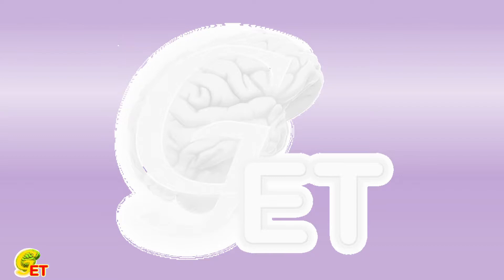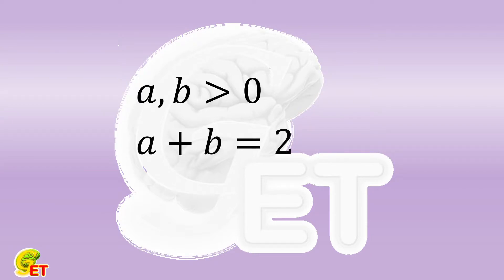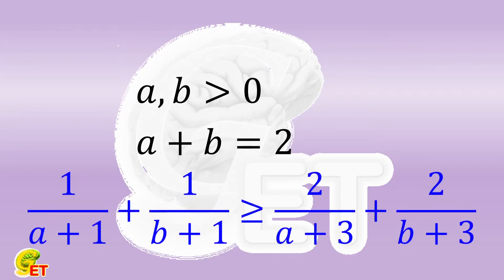Hello, my friends. Thank you very much for subscribing to our channel. Both A and B are positive, and their summation equals 2. Would you like to prove that 1 over A plus 1, plus 1 over B plus 1, is not smaller than 2 over A plus 3, plus 2 over B plus 3? Why not give a try, and we will come back soon.